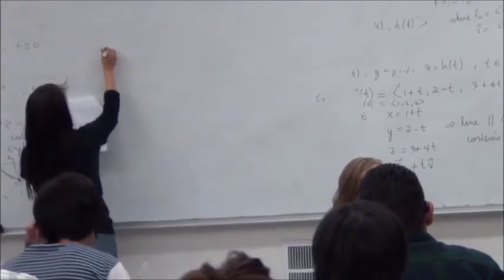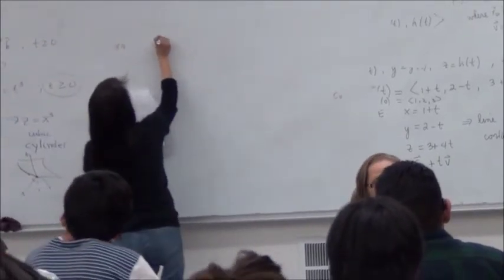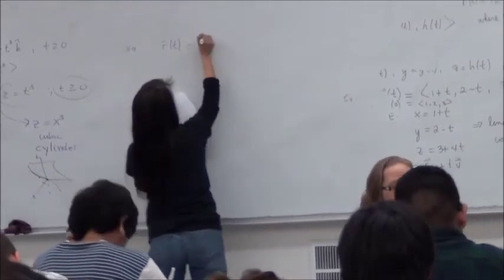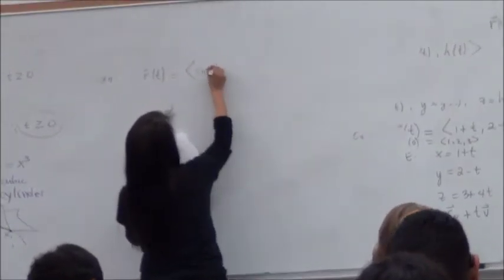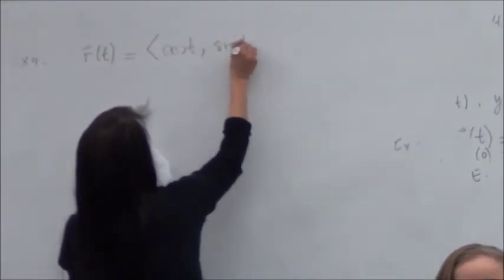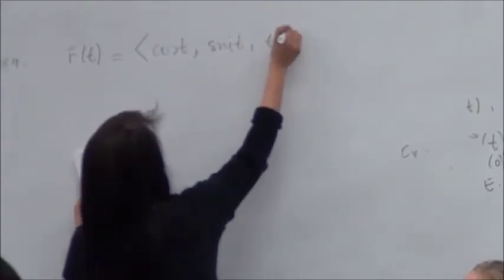Example 4, but let's change it a little bit. Let's say I have R(t) equals, and let me use this notation: cosine t, sine t, t. Are you okay with that notation as well?